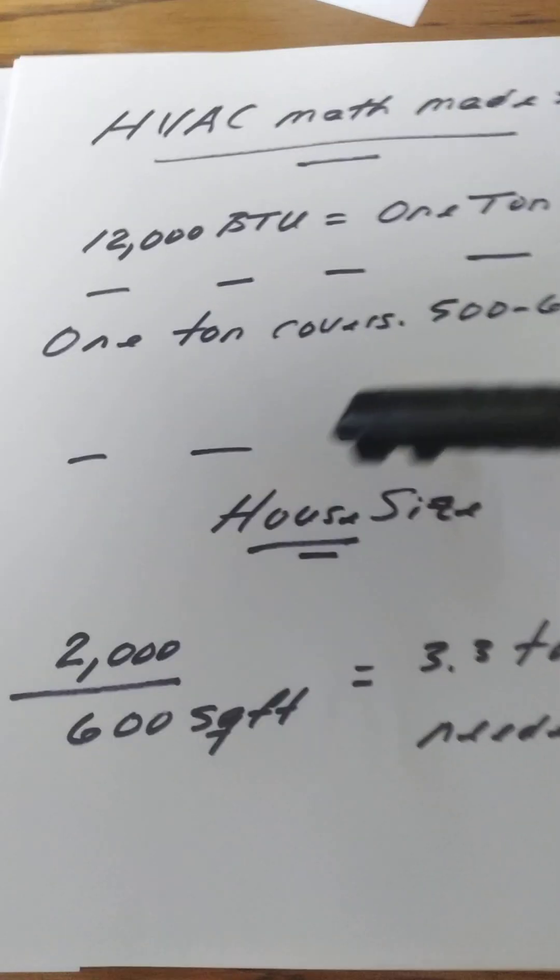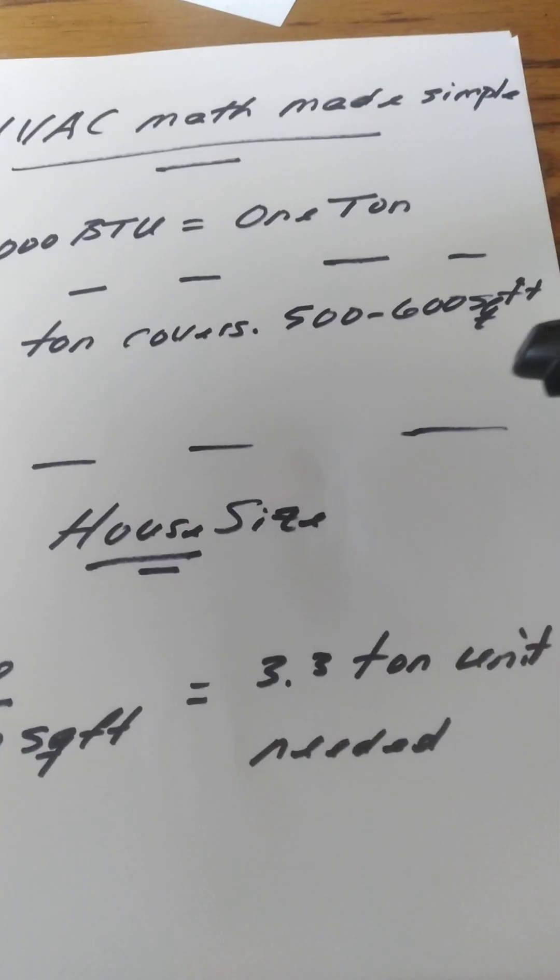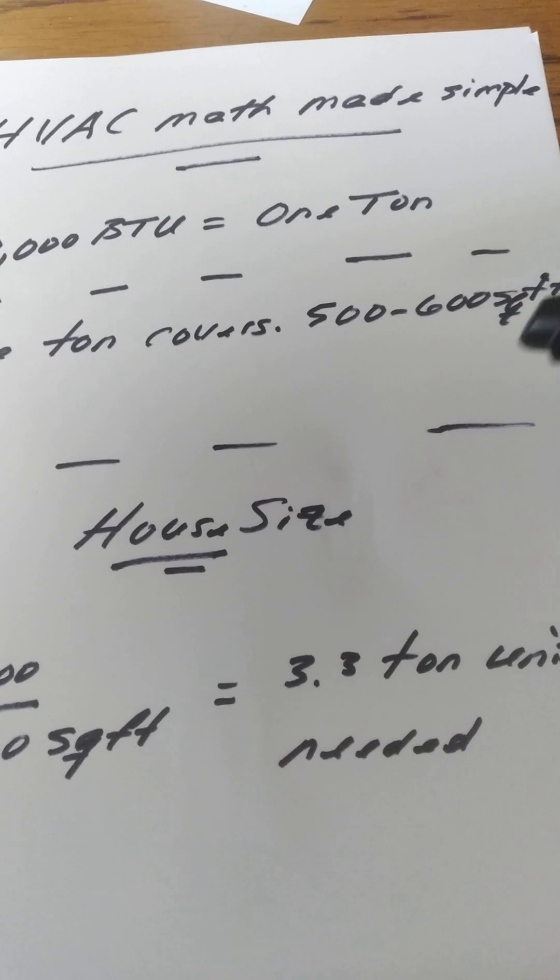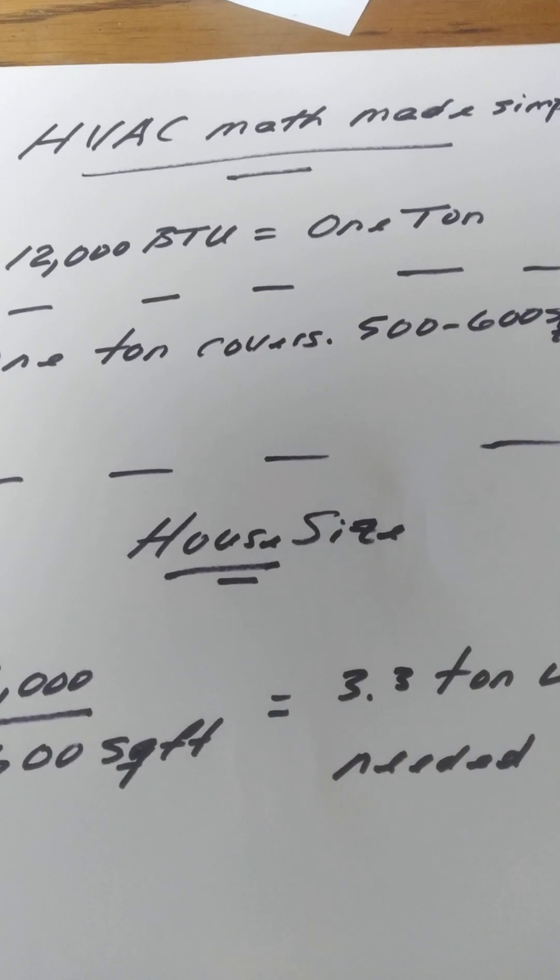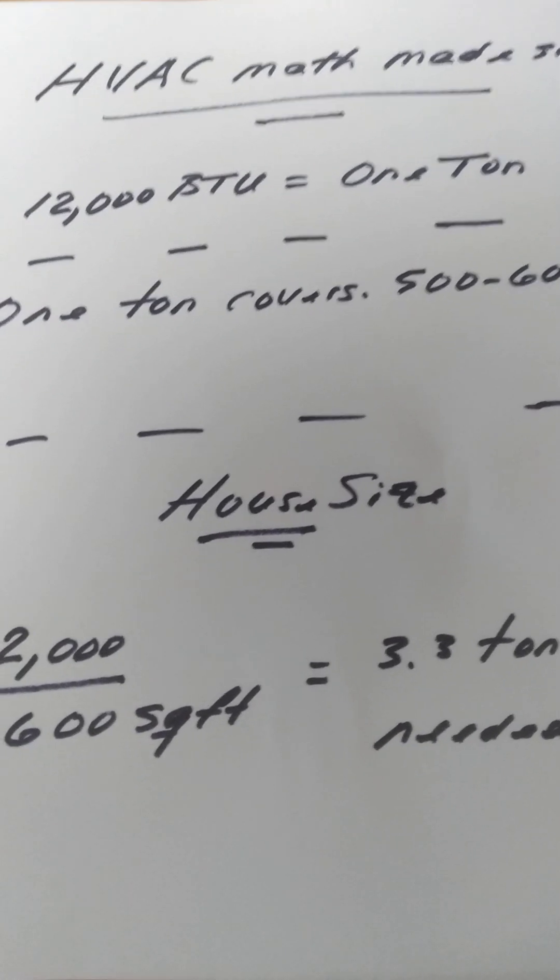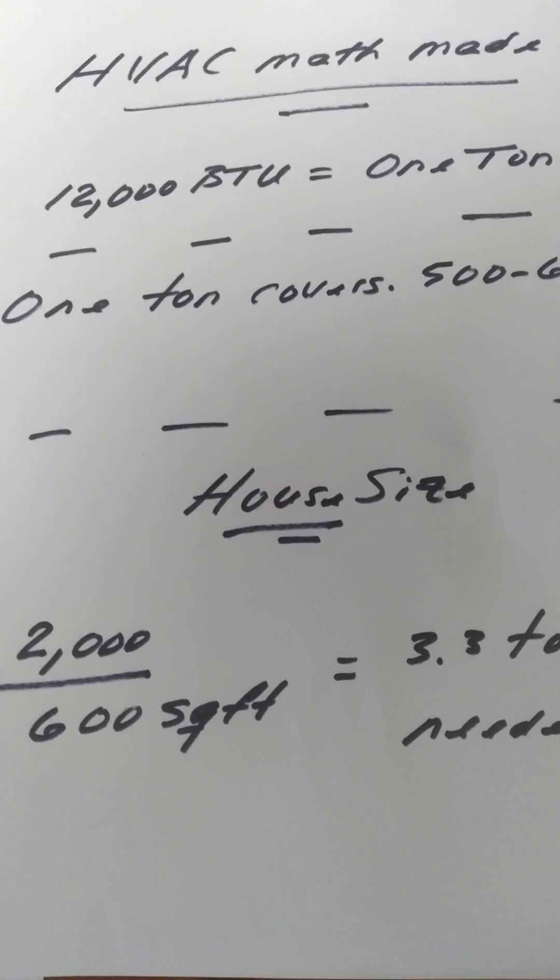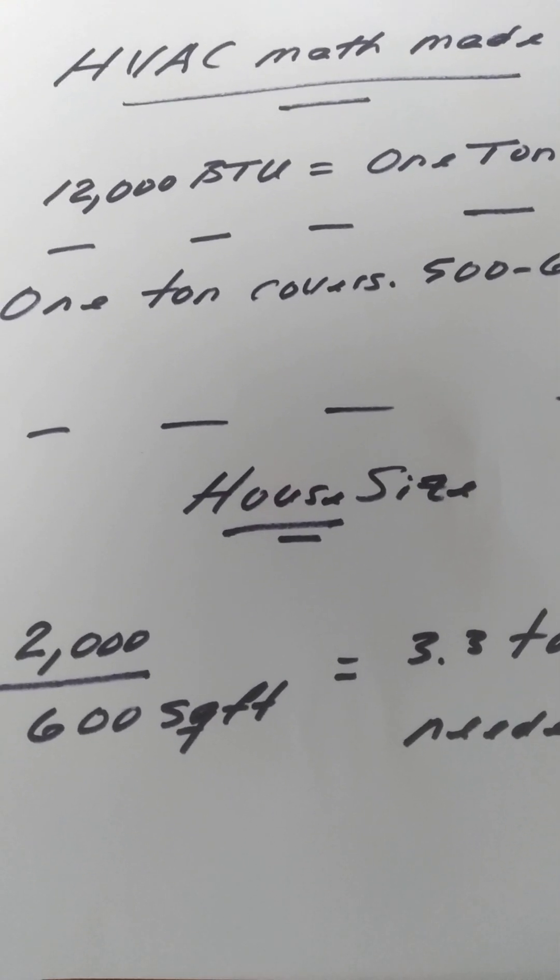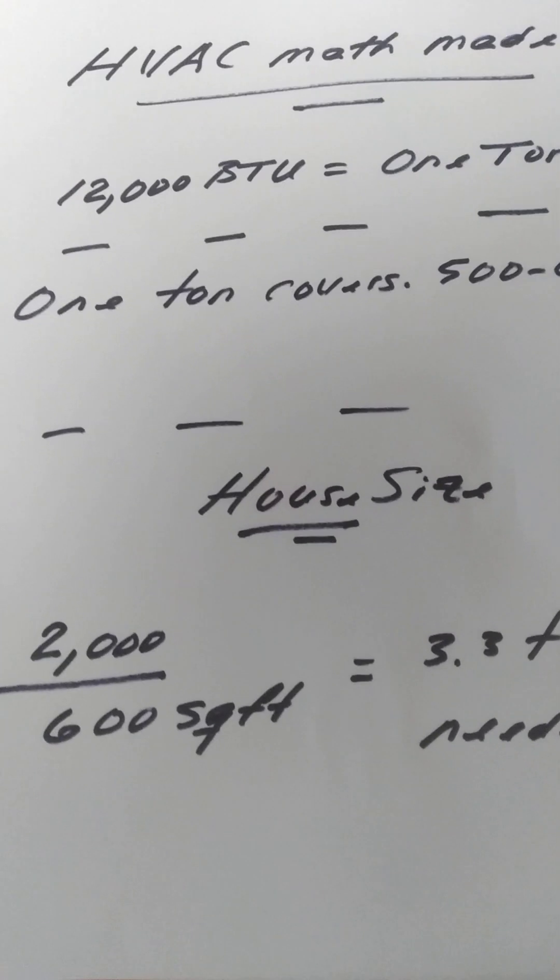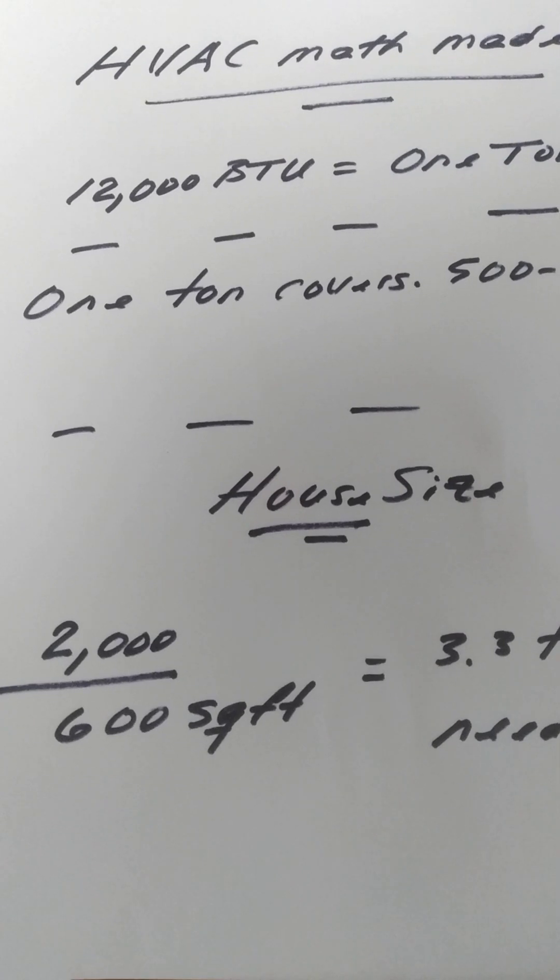One ton covers five to six hundred square feet. So once you have sized your house properly and know what size your house is, then you can plug these numbers into a formula.